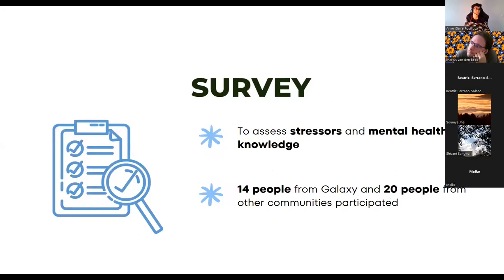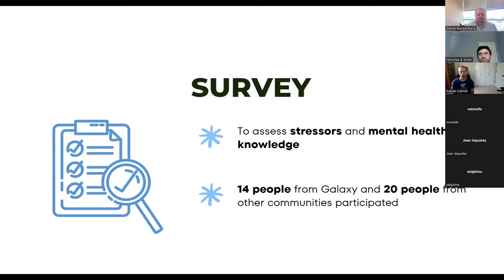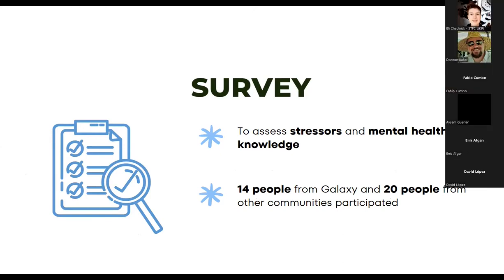Another activity we did is the survey. We conducted a survey to assess stressors used in open source, as well as to know the community's mental health knowledge. Overall, 14 people from the Galaxy community participated and 20 people from other communities participated. We conducted this survey to help us write the guidelines we're developing.